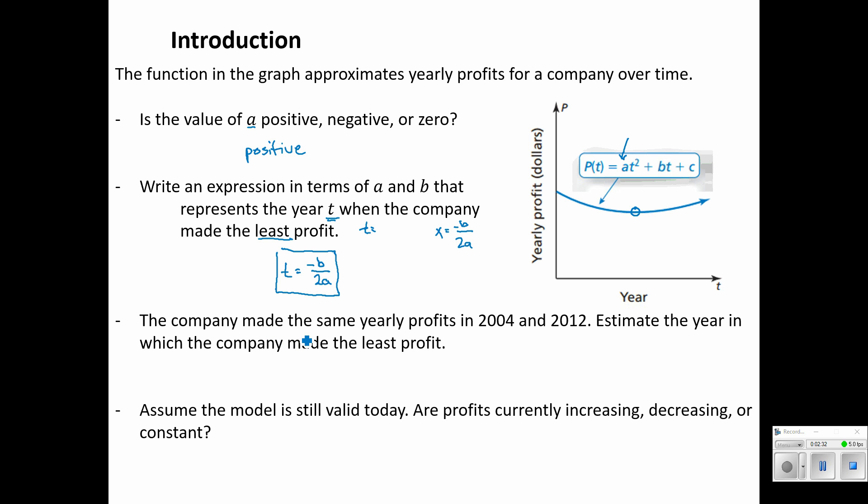The next bullet point. The company made the same yearly profits in 2004 and 2012. Estimate the year in which the company made the least profit. Well, if it made the same profit, it means it had the same height. Let's just say that these two places that have the same height, maybe this is 2004, and this is 2012. We can see they have the same height, so that indicates the same profit. If those two have the same height, then the lowest profit should be in between those two, based on the symmetry of the graph. So all I want to do is average 2004 and 2012. And we get 4,016 over 2, which is 2008.